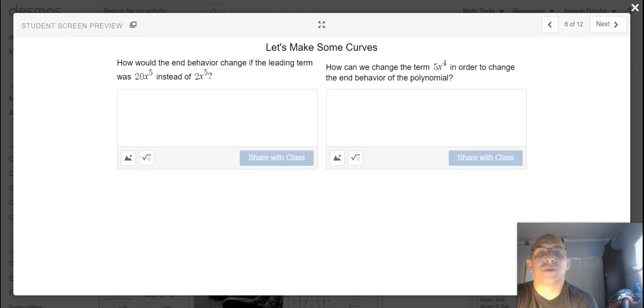Let's build some dialogue with your peers. And then how can we change the term 5x to the fourth in order to change the end behavior of the polynomial? So that kind of gives away some hints as to what the polynomial should be, but yeah, once again it's part one so we're just exploring.